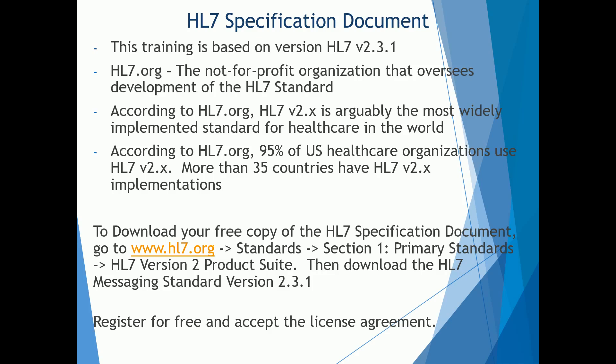What you're going to need when learning HL7 is to download a free copy of the HL7 specification document for this version. You can actually go to HL7.org, go to the Standards section at the top, you'll see section one — Primary Standards — and then you can go down and download your version of HL7. It'll come in a PDF. It's a pretty large document — I can actually show you.